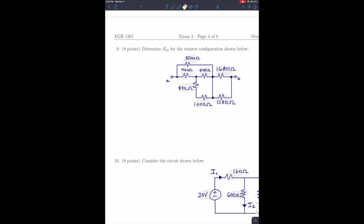Okay, this is the solution to problems 9 and 10 from exam 2 for Engineering 1301, fall 2018. So in problem number 9, we're looking for the equivalent resistance between points A and B of this circuit.